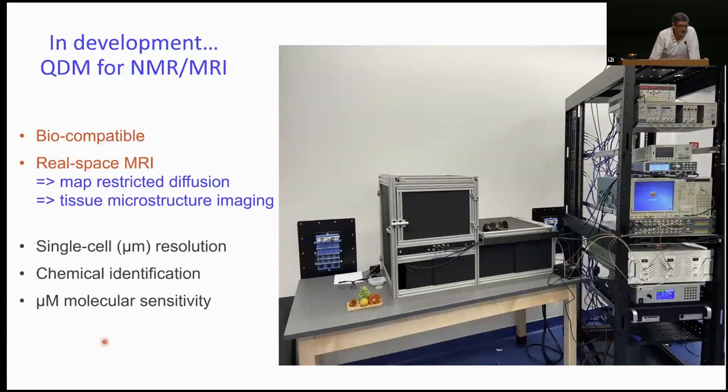So in development, we're now making a QDM, quantum diamond microscope, to do NMR and MRI. Biocompatible system, real space imaging from that microscope images like with the rock. Can you do k-space? Yes, we've demonstrated that too. And remember, when you put gradients on, you can use the gradients not just to encode information in the nuclear spins you want to read out, but also in the electronic spins of the NVs, which are your sensors. That opens up possibilities that we haven't fully explored.